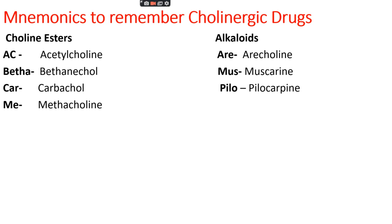For cholinergic drugs, there are two groups: cholinoesters and alkaloids. To remember cholinoesters, we use 'AC Betha Carme': AC for Acetylcholine, Betha for Bethanechol, Car for Carbachol, Me for Methacholine. To remember alkaloids, we use 'Array Musk Pillow': Array for Arecoline, Musk for Muscarine, P for Pilocarpine.